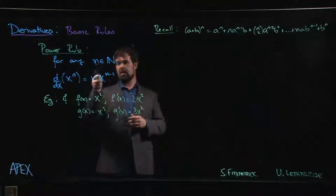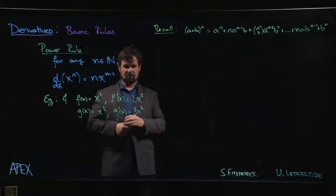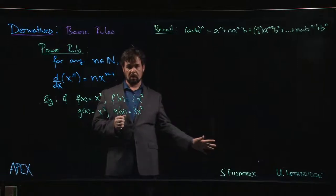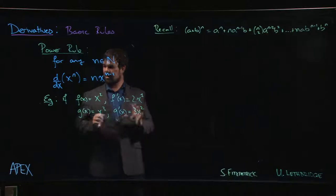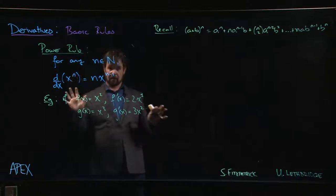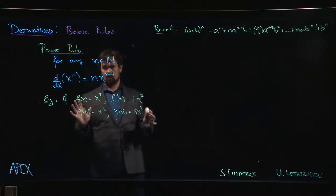So I've stated this for n being a natural number, a positive integer, because that's what we're capable of proving at this point. Later on, we are going to see that, in fact, the power rule is valid for any real number exponent. So n could, in fact, be any real number, but we're not ready to show that yet, so we'll start with this basic case.